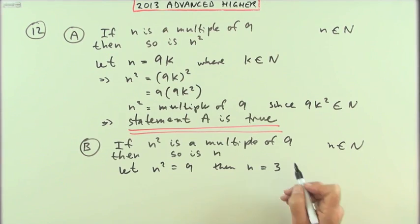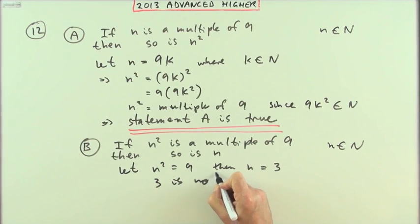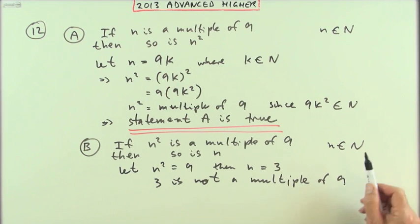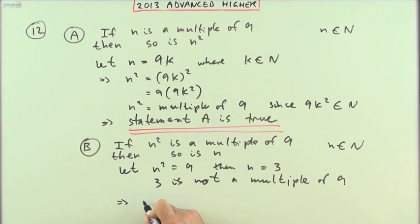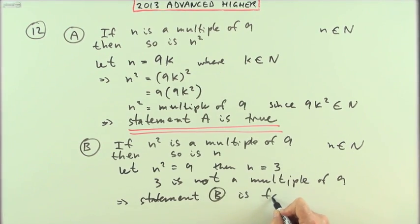Remember, n is a natural number, not plus or minus 3. Then n equals 3, and I'll just make the statement. 3 is not a multiple of 9. To be a multiple, you have to be a whole number, a natural number, times it. 3 is not a multiple of 9, which means that statement B is false.